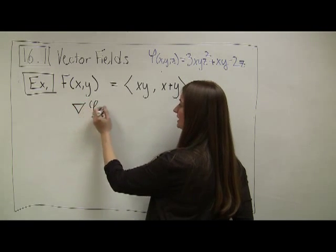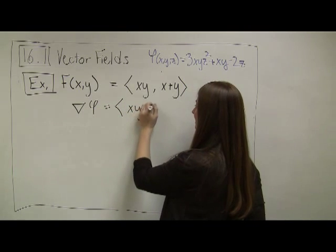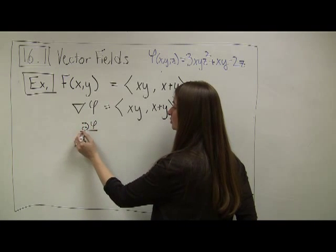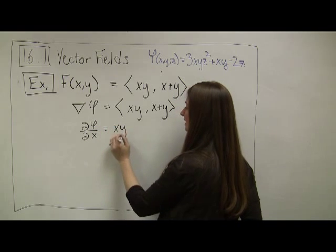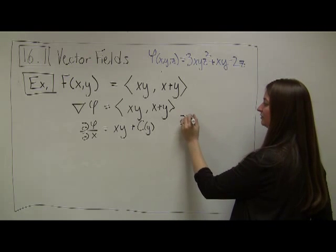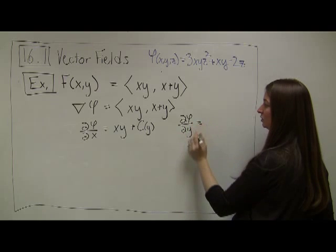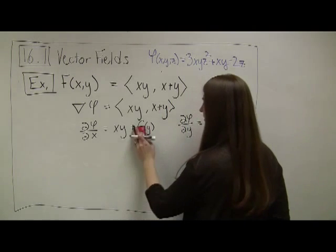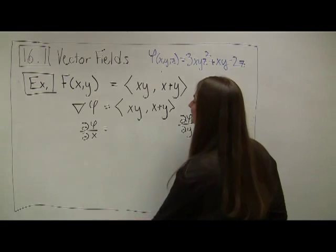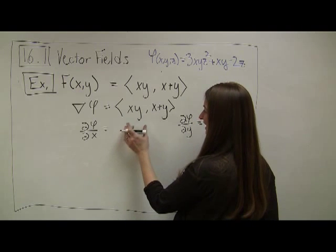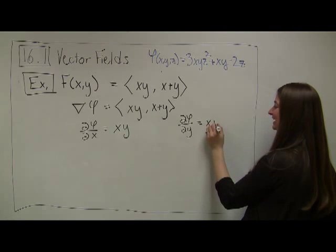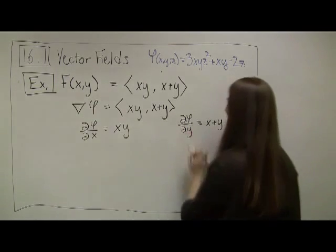This means I need the gradient of v to equal (xy, x + y). So ∂v/∂x must equal xy, and ∂v/∂y must equal x + y — that's my definition of what a gradient function is.